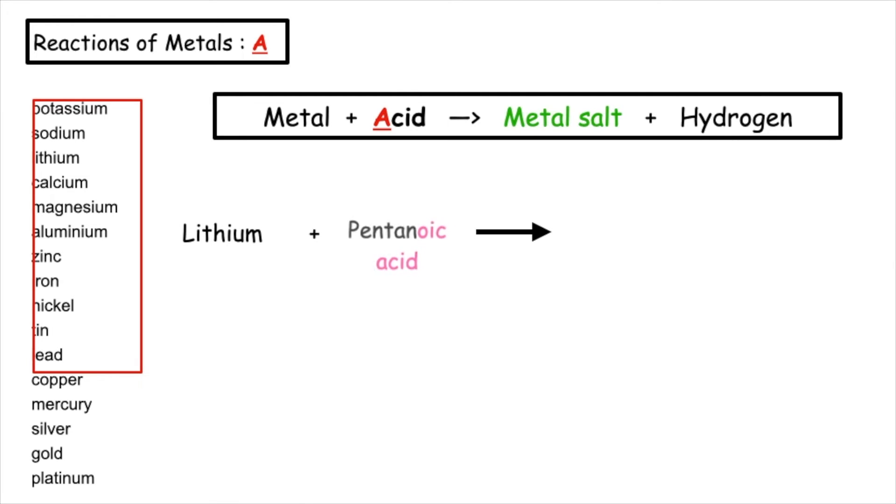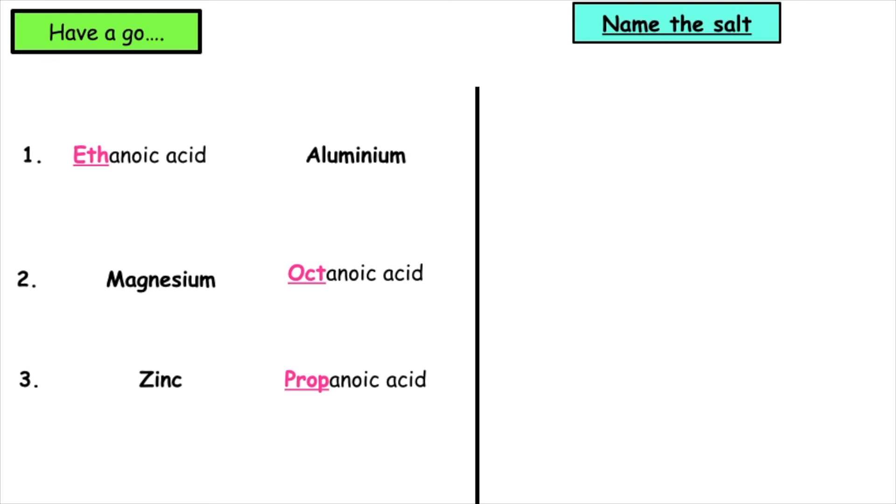In this third example we have lithium plus pentanoic acid, and the salt produced this time would be lithium pentanoate.